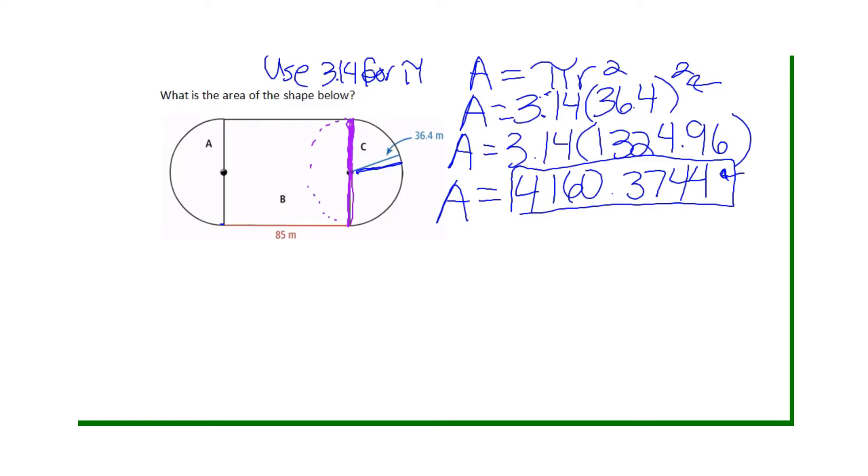Now when we multiply to get the height of the rectangle, we have to multiply the 36.4 by two, which gives us 72.8. So we know the height of the rectangle is 72.8, and we know the base of the rectangle is 85 meters.